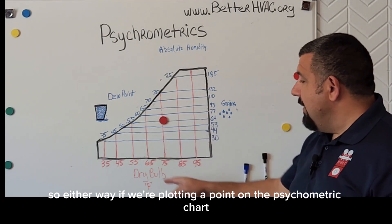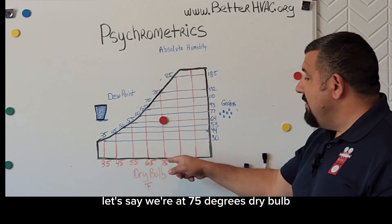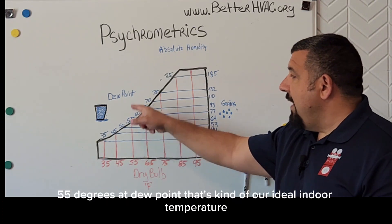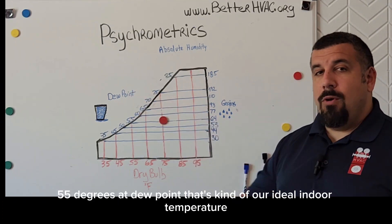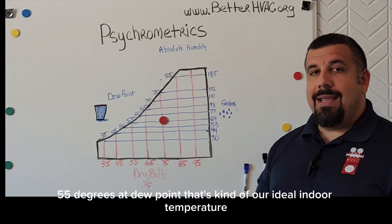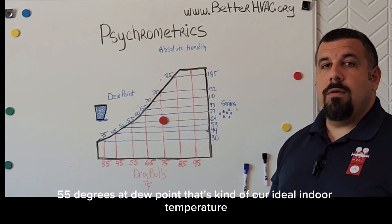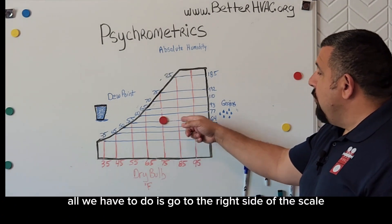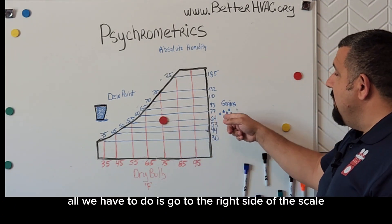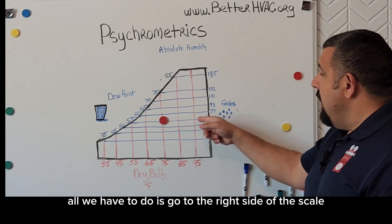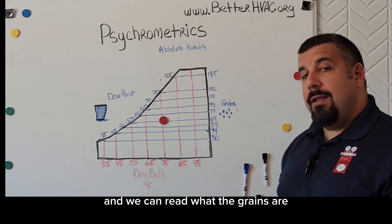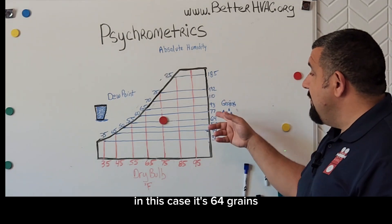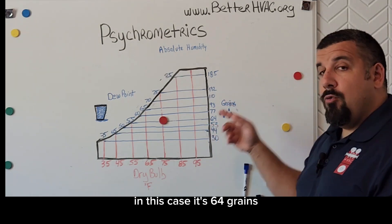That's the psychrometric chart. Let's say we're at 75 degrees dry bulb and 55 degrees dew point — that's kind of our ideal indoor temperature. All we have to do is go to the right side of the scale and we can read what the grains are. In this case, it's 64 grains.